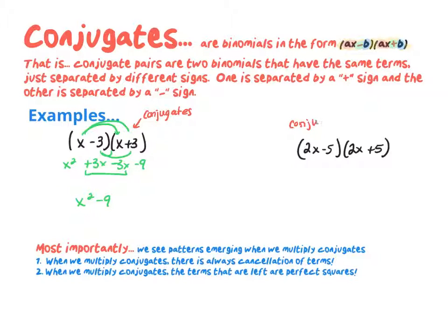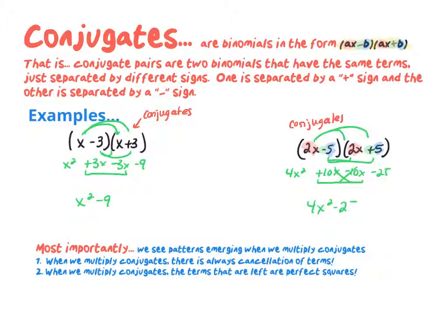Another example: (2x + 5) and (2x − 5) are conjugates because they share 2x and 5, with only the sign differing. Multiplying: 2x times 2x is 4x squared, 2x times 5 is positive 10x, negative 5 times 2x is negative 10x, and negative 5 times 5 is negative 25. The 10x terms cancel, leaving 4x squared minus 25.